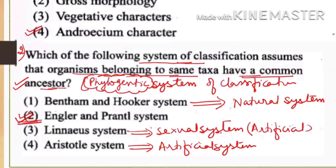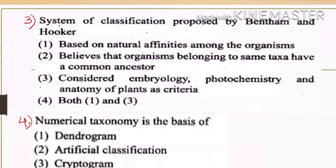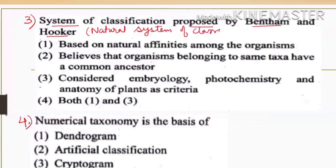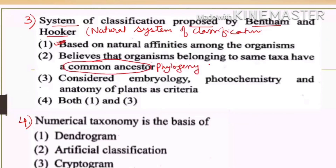The correct answer for phylogenetic system is option two. Now, for the system given by Bentham and Hooker — it is the natural system of classification, based on natural affinities among organisms. It does not give importance to phylogeny. However, it does consider embryology, phytochemistry, and anatomy of the plant as criteria, so the answer is option four — both one and three.